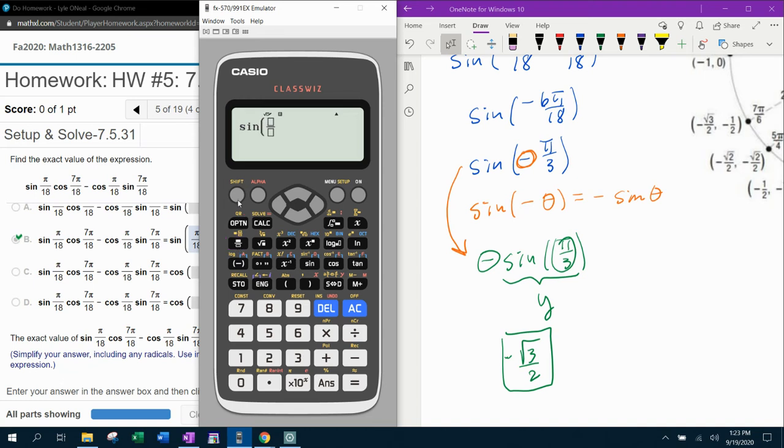Sine of pi over 18 cosine of 7 pi over 18, cosine of 7 pi over 18, sine of 7 pi over 18. It didn't give it in radical form. That's so sad. But notice it did give me a negative, which I know the answer is supposed to be negative. I wonder if this is the decimal equivalent of negative square root of 3 over 2.